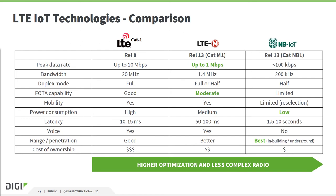A few items to compare in the cellular IoT technology table: data rates, firmware over-the-air capability, power consumption, range, wall penetration, and last but not least, cost.